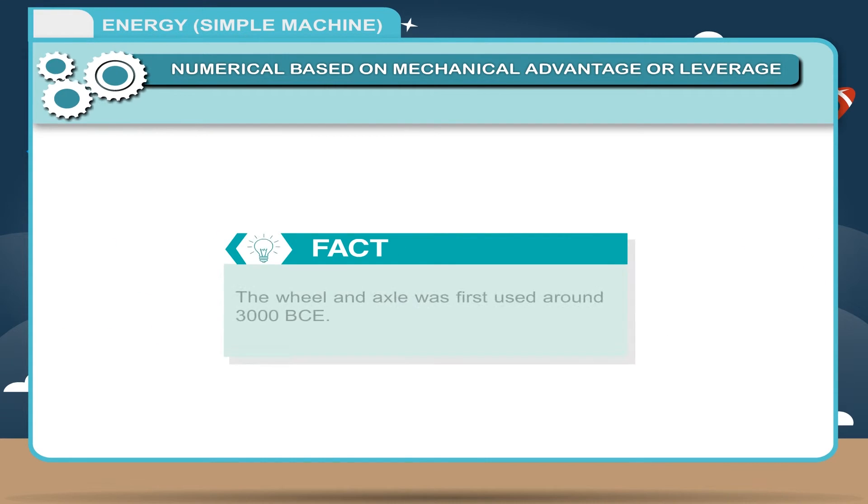Fact: The wheel and axle was first used around 3000 BCE.